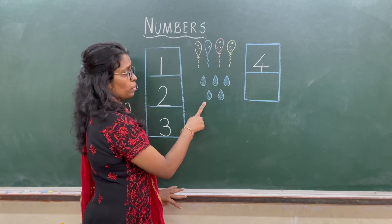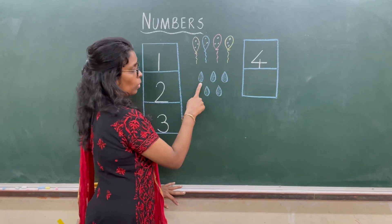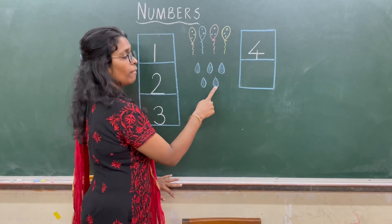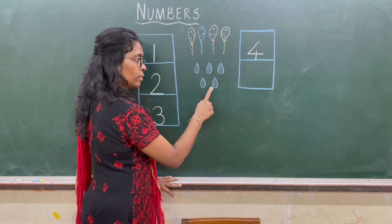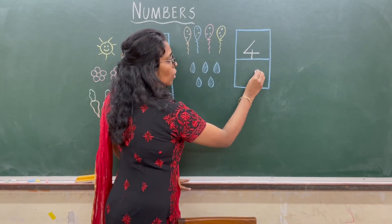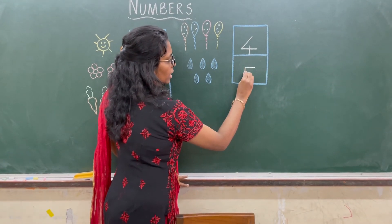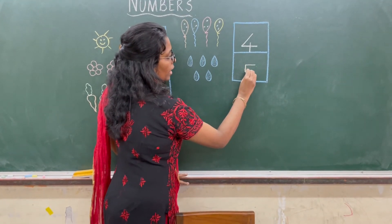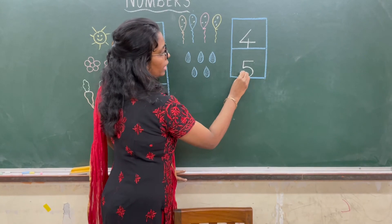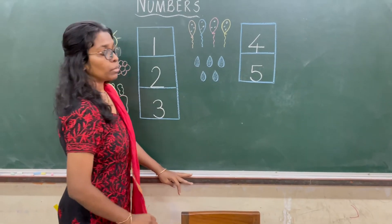Now we have some raindrops — how many drops are there? 1, 2, 3, 4, 5. So how do we write number 5? Horizontal line, vertical line, and a curve, touching the line down. That's the number 5.